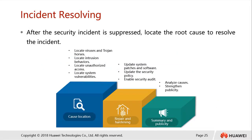Next is incident resolving. After performing suspension, we need to know how to resolve the incident — locate the root cause to resolve it. Root cause location could be due to malware: we locate viruses, trojan horses, adware, and so forth. We also identify intrusion behaviors, locate unauthorized access to systems, and check for patches on our system in case there is a system vulnerability.